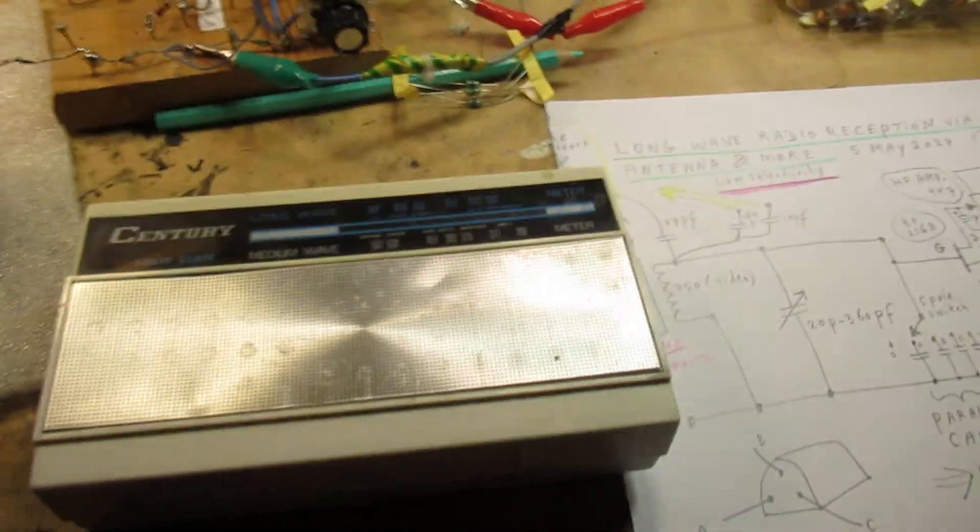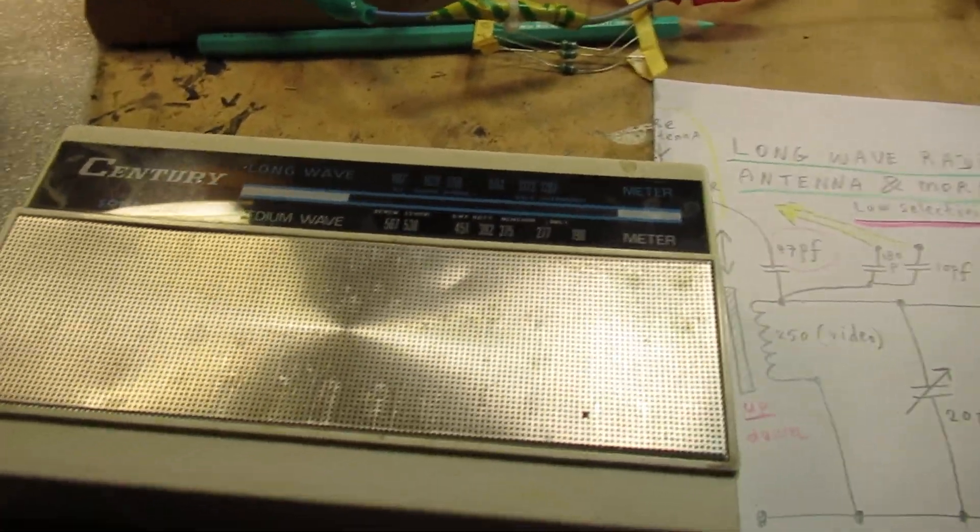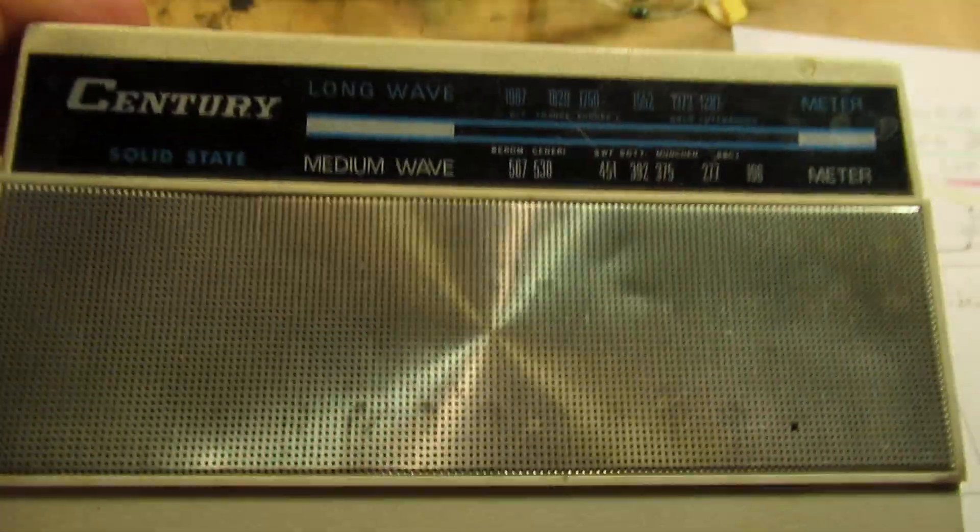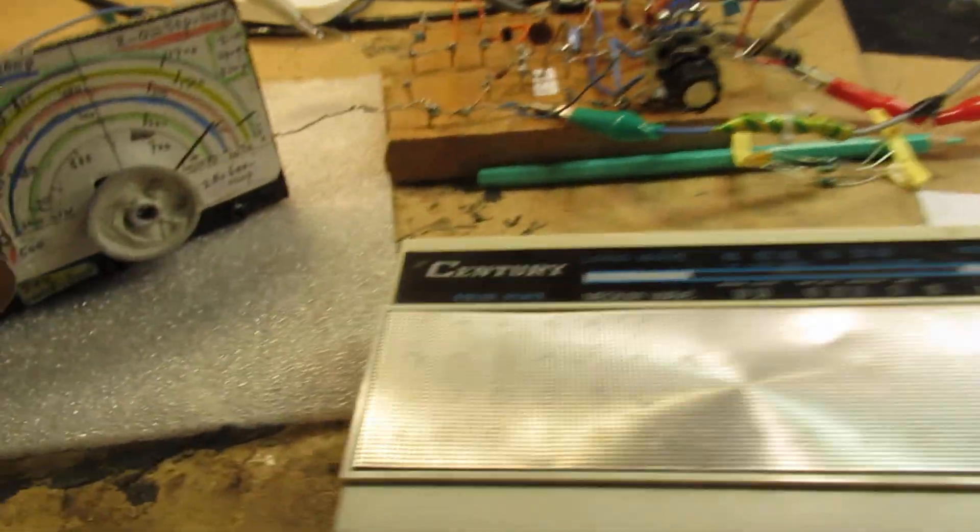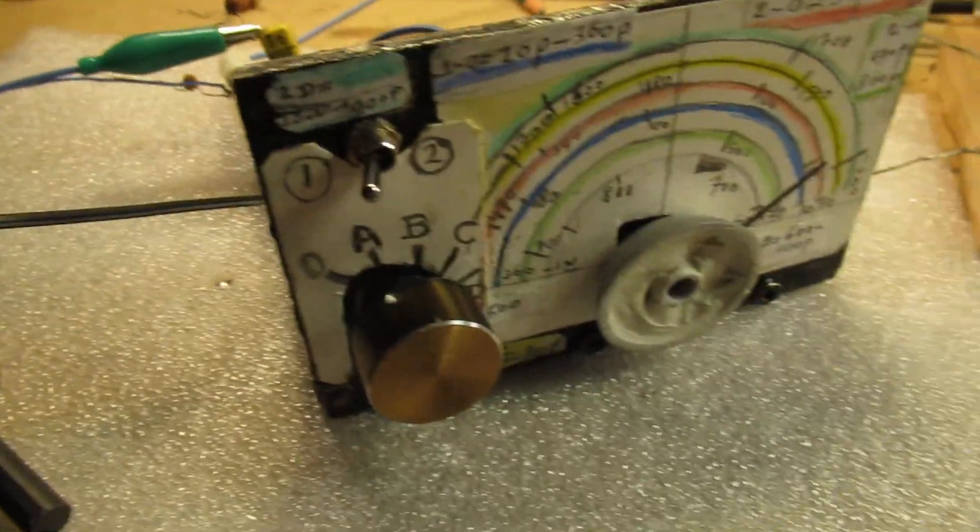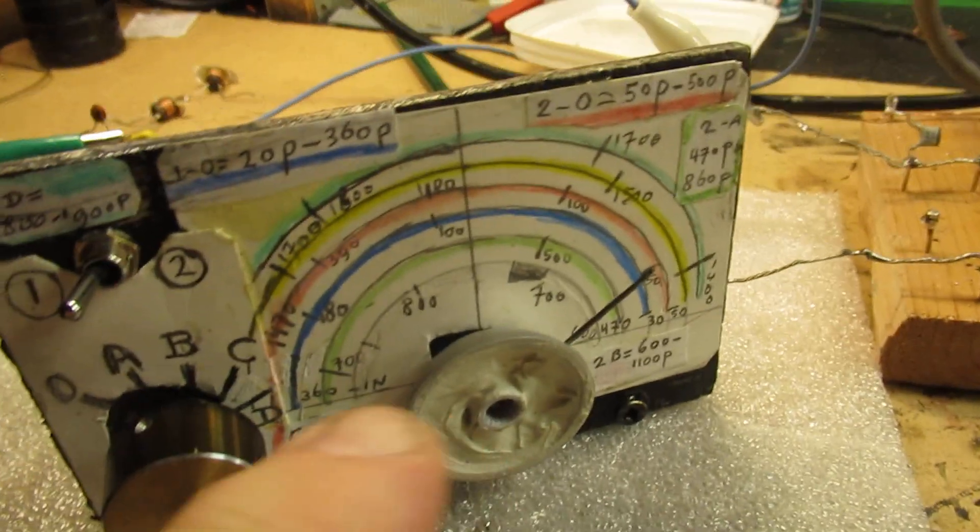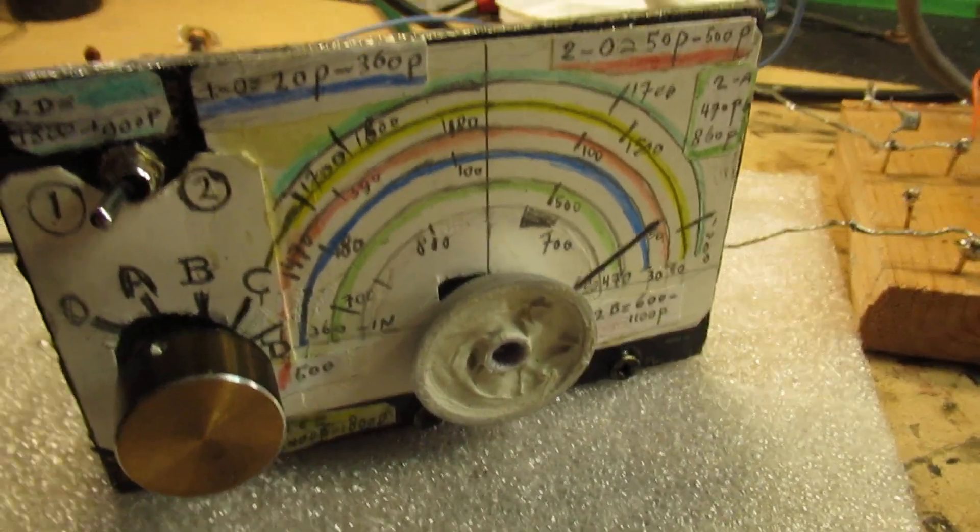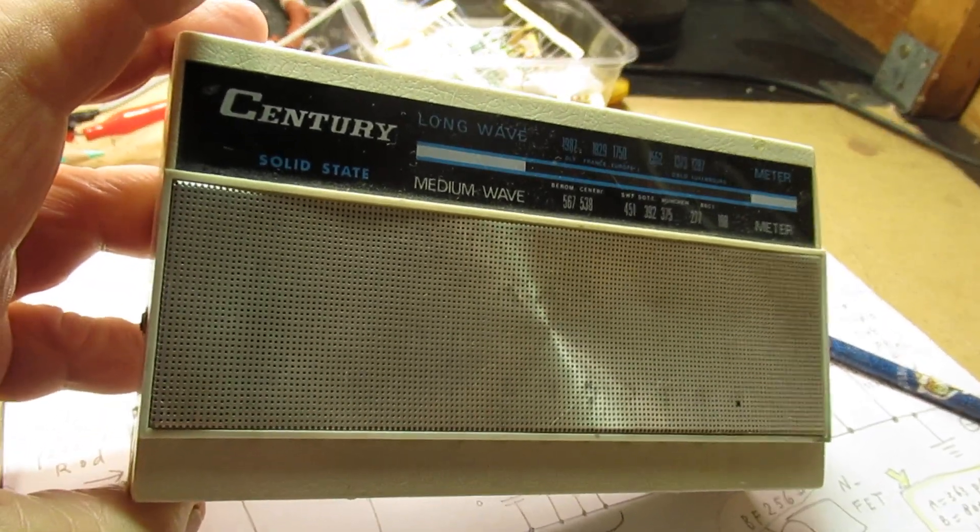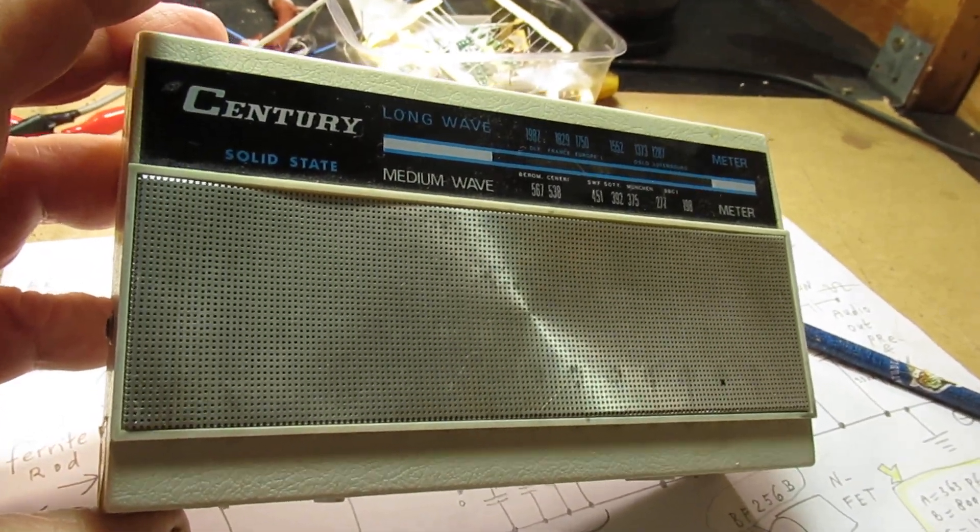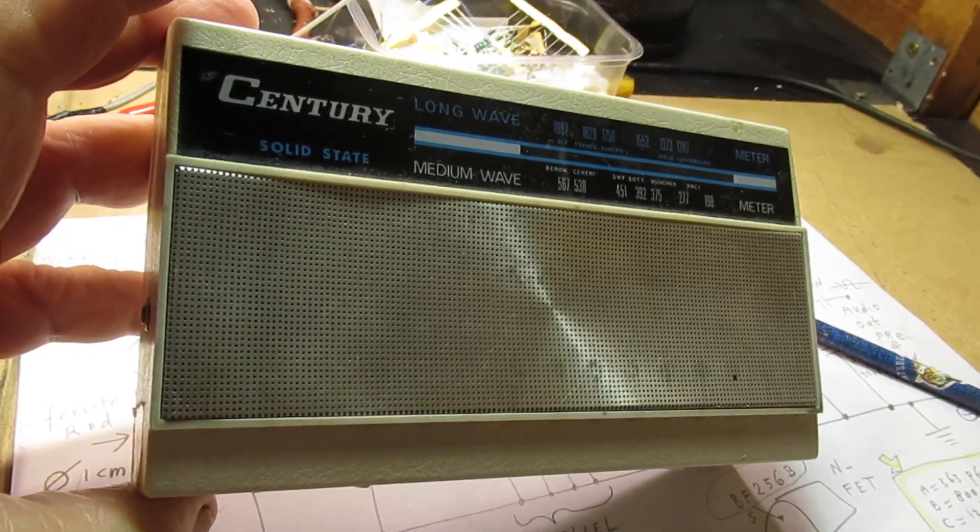This is a superheterodyne radio that I had in the past, and this is a TRF radio. Two completely different ways of receiving a radio signal. Here we don't need an outdoor antenna. We receive the radio station on the so-called ferrite antenna or ferroceptor.